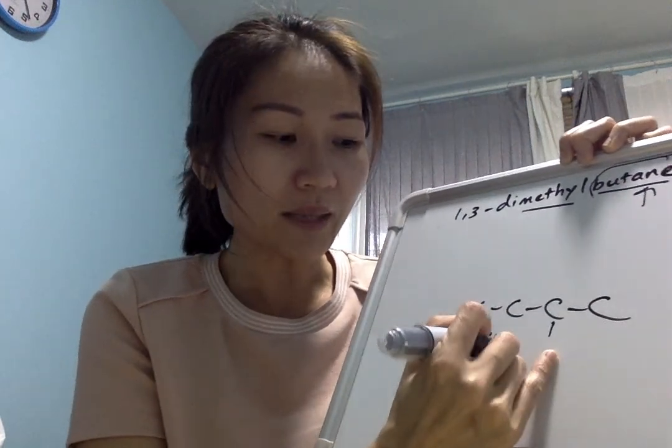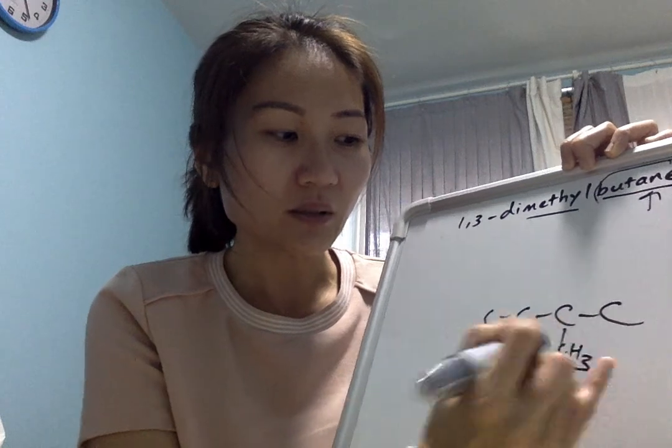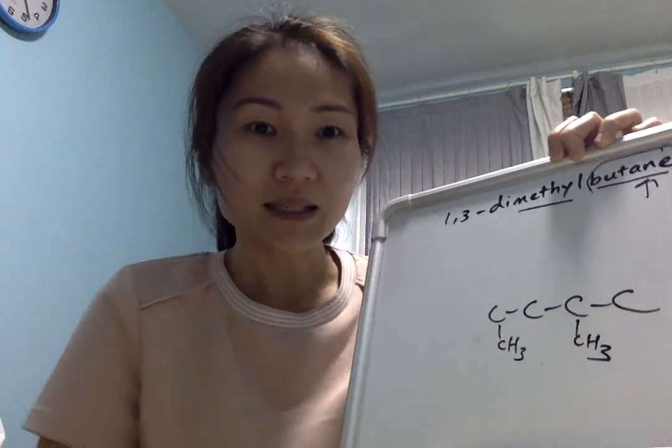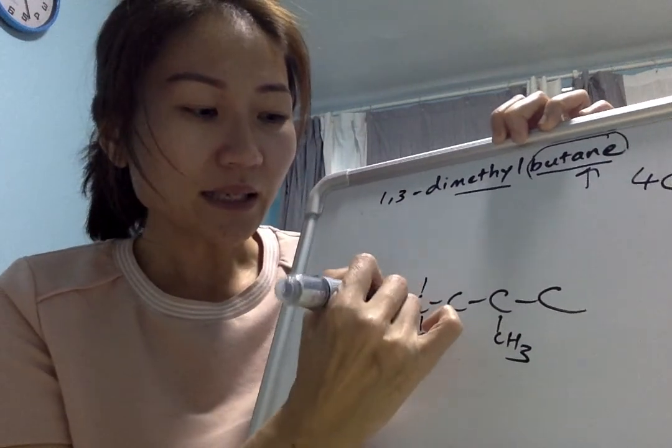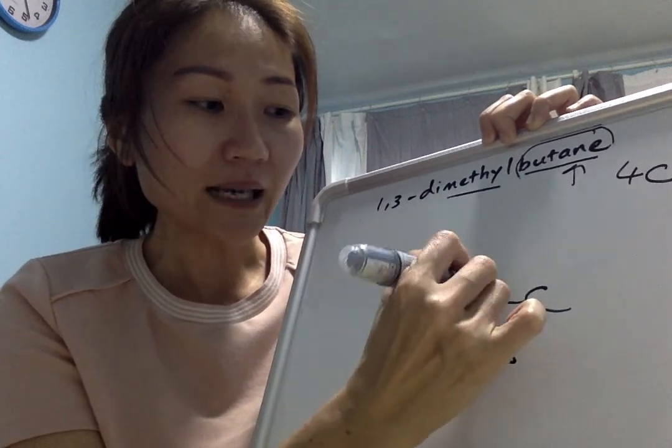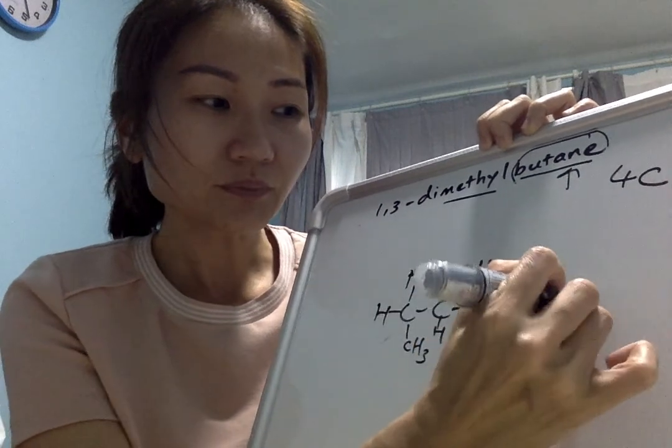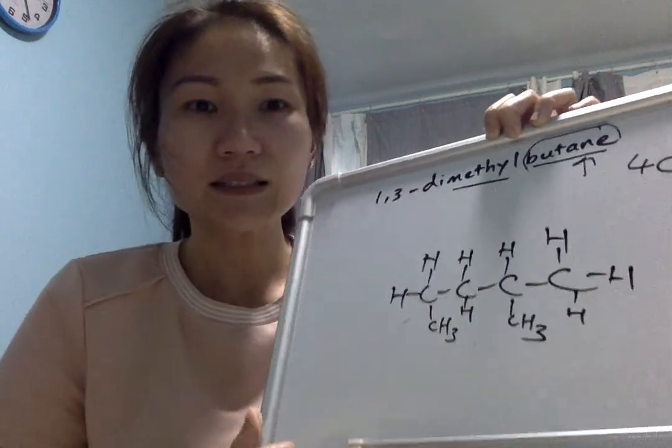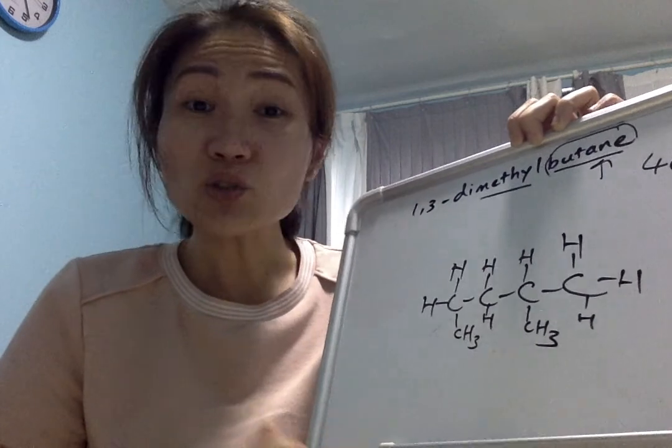Okay, so one methyl group on each position on one and three. And the rest of the carbon atoms I'm gonna fill up with hydrogen atoms. Right, now let's try and name this structure.